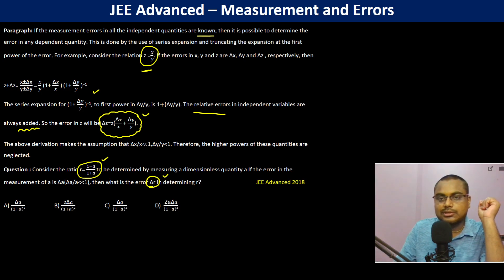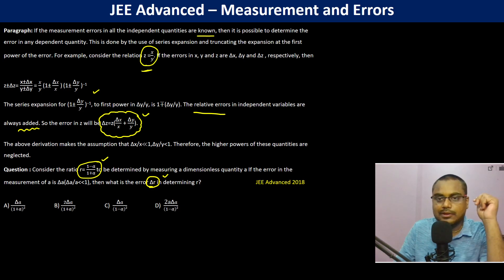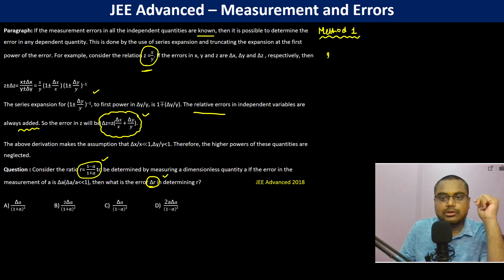So let us solve this. We will solve by two methods. Method 1: R is equal to 1 minus A divided by 1 plus A.